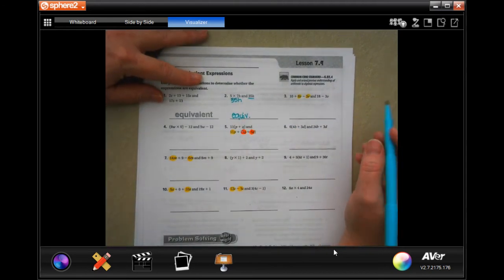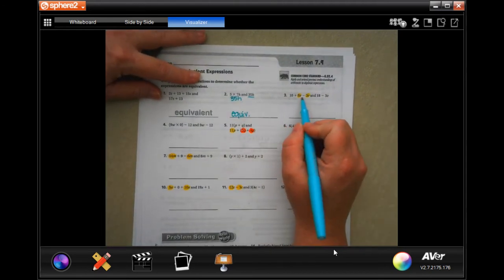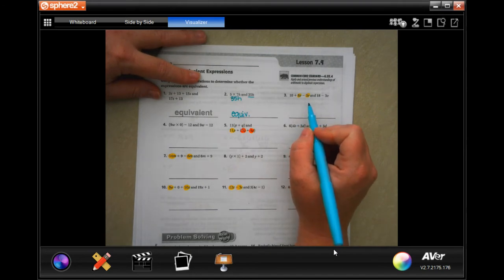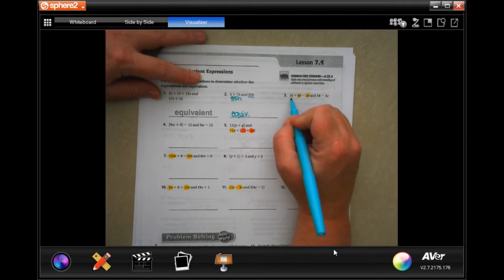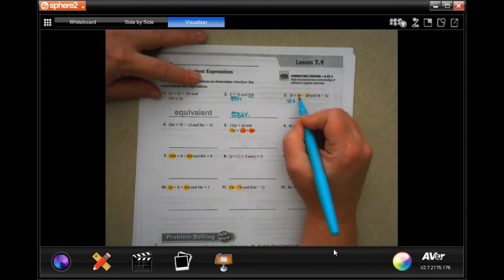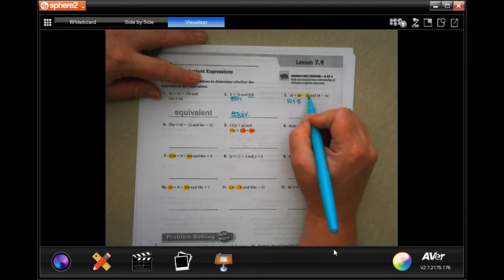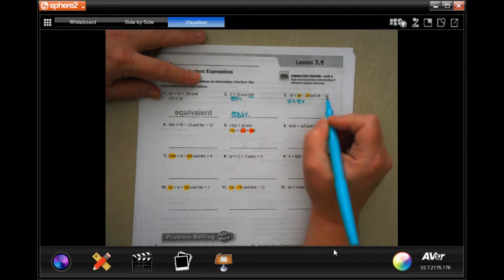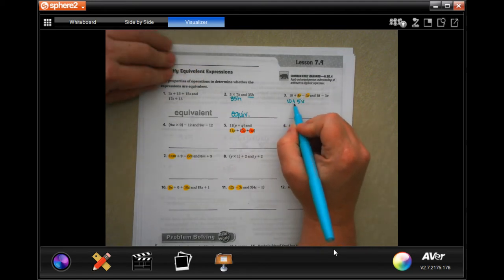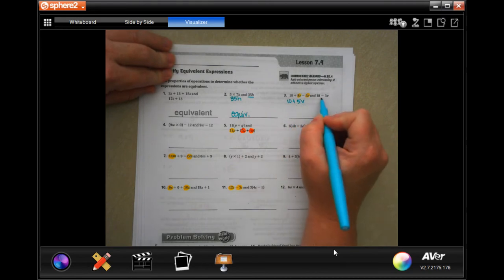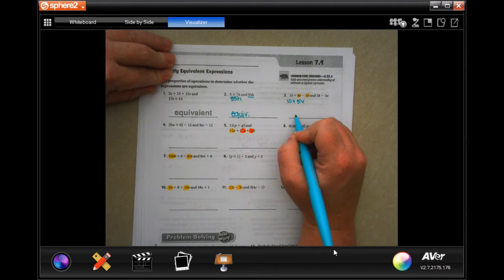You'll see I went through and I just highlighted all of my like terms. So my 10 is alone, so that's going to stay 10, and 8 minus 3 is 5, and they have the same letter, so I can just do that. So is 10 plus 5v the same thing as 18 minus 3v? No, it's not.